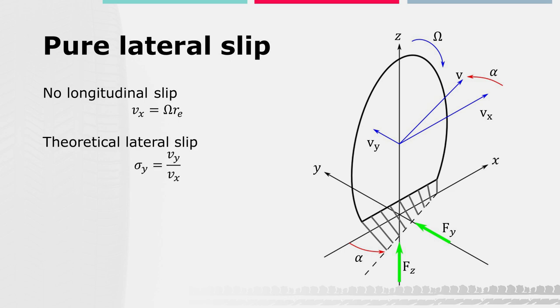Sigma y is defined as the ratio between Vy and Vx. Alpha is the resulting angle as the arctangent of sigma y.